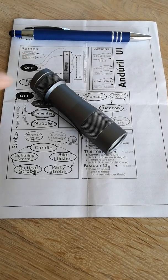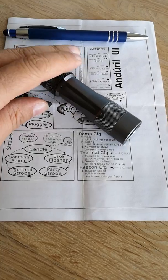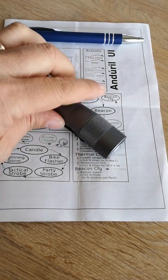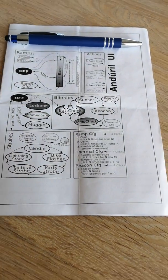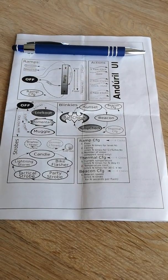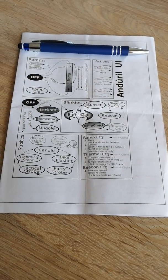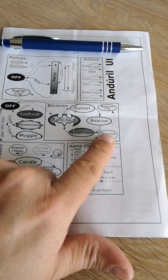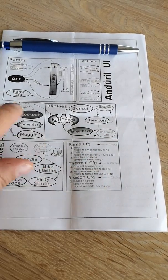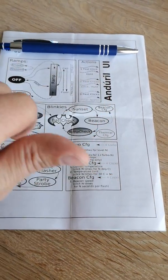Okay, here's Mad Max again. Several people asked me how to do the thermal configuration for the FW3A. You should have the Anduril Cheat Sheet and here's what we do. We want to do the thermal config. If you print it out in color it will be much better.